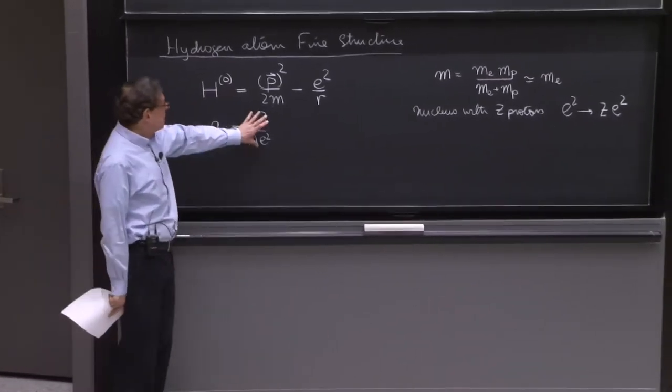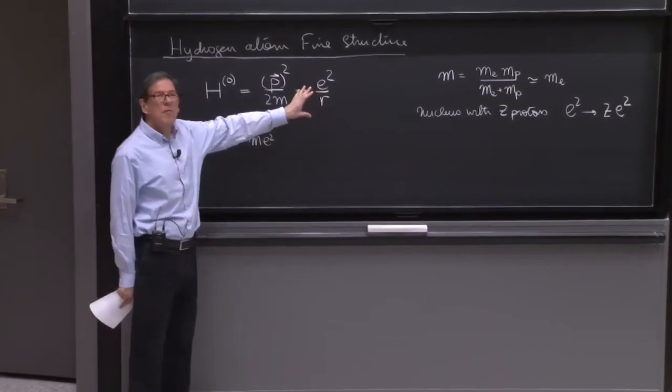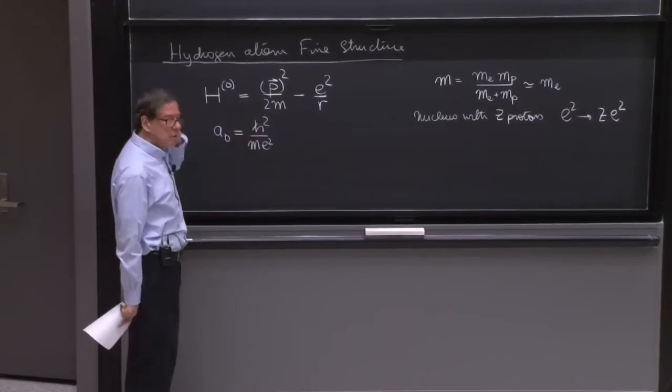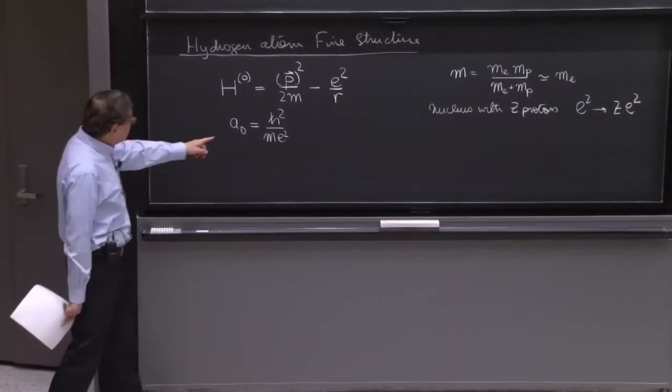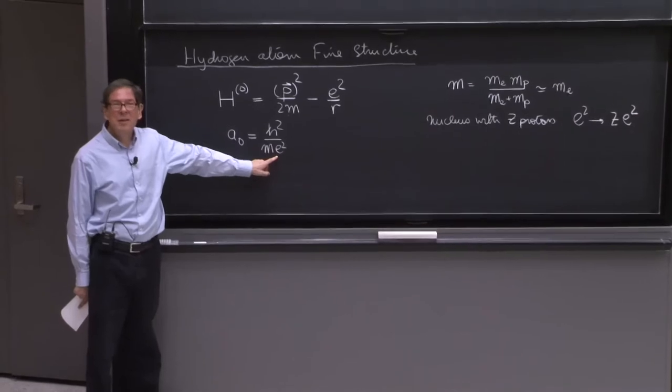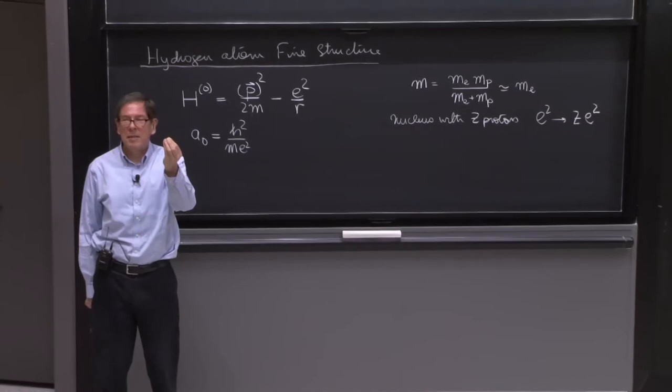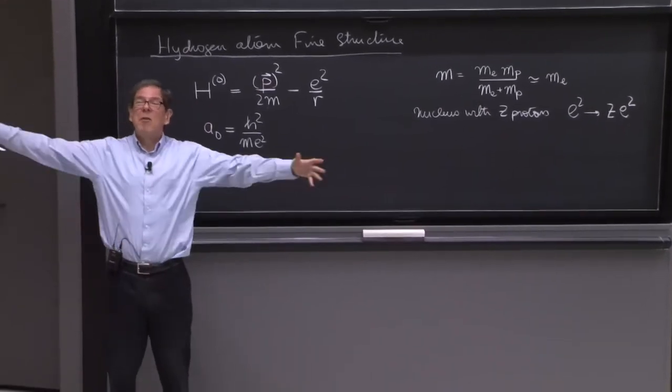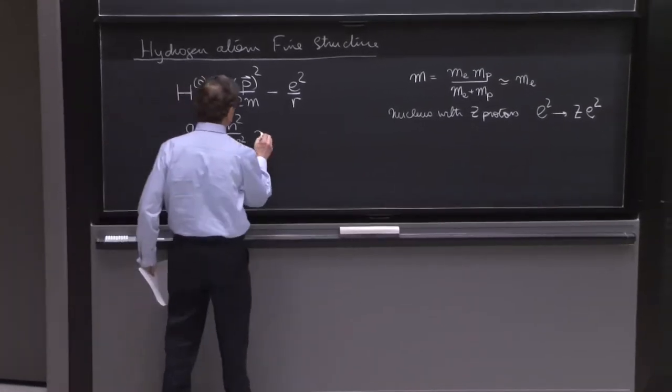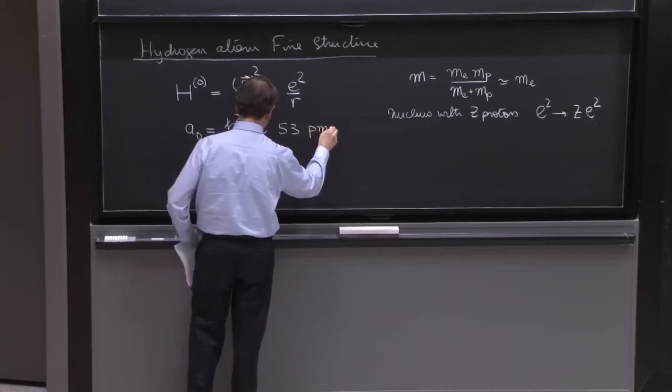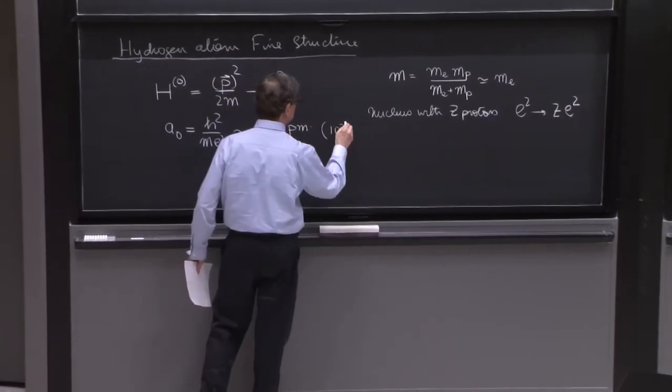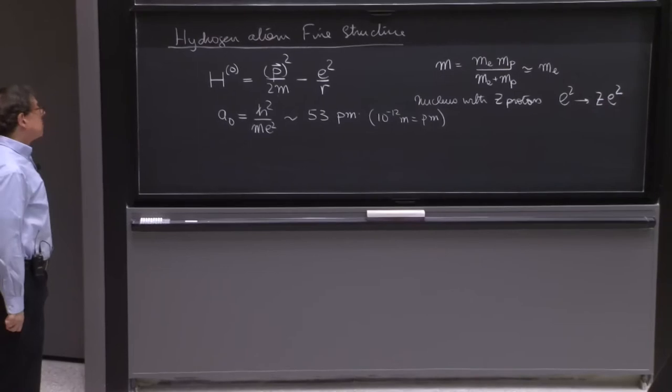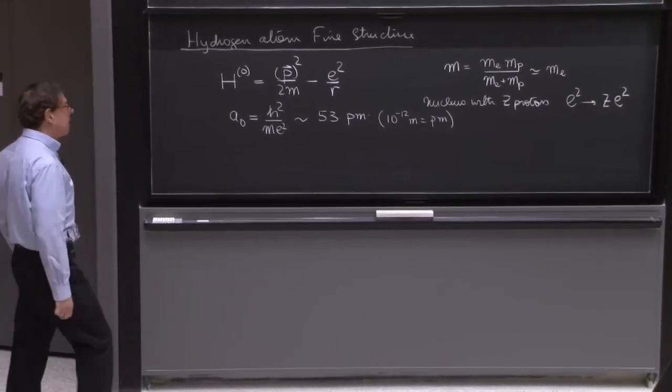The Bohr radius is ℏ² over m e². That this has units of length is something you should be able to derive from here in a few instances. Please make sure you know how to derive it without having to count mass, length, time units. One piece of intuition is that e appears in the denominator, which means that as the strength of electromagnetism is made smaller by letting e go to 0, the orbit of the electron would be bigger and bigger. This is about 53 picometers, where a picometer is 10⁻¹² meters.